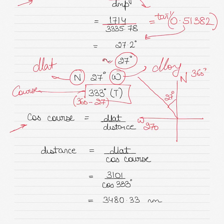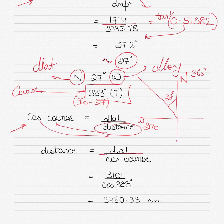And the last bit of this question is: cos of course equals D lat by distance. You are trying to find distance and not course, so distance will become here. So distance will be equal to D lat by cos course. Cos comes in the denominator. You exchange the two. So distance equals D lat by cos course. You know the D lat value from above. Put the course value of 333 degrees here. So 3101 divided by cos of 333 degrees would give you the answer, 3480.33 nautical miles.